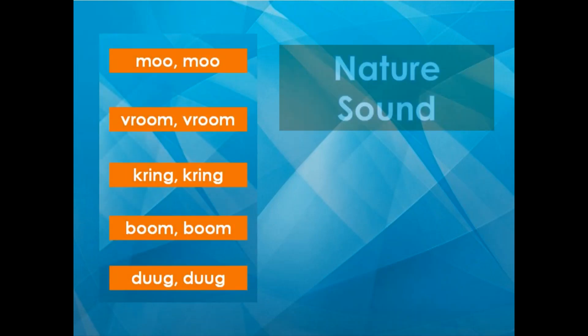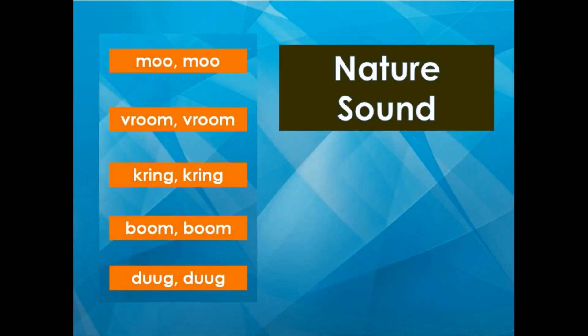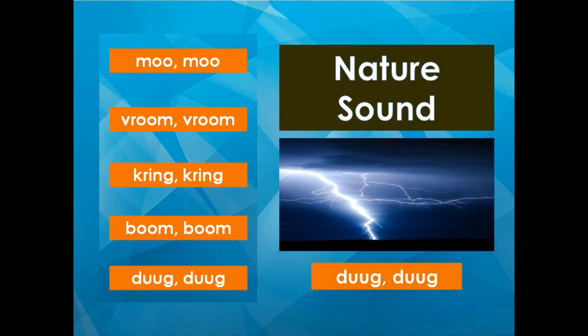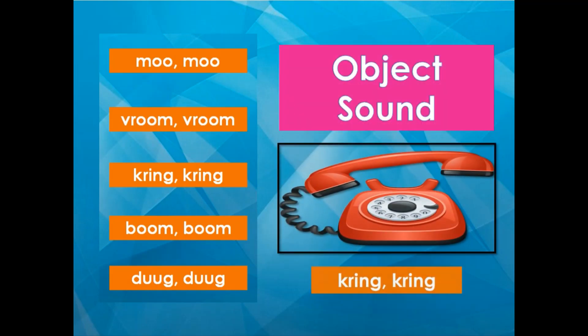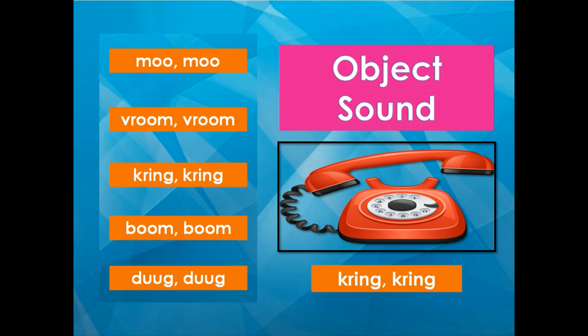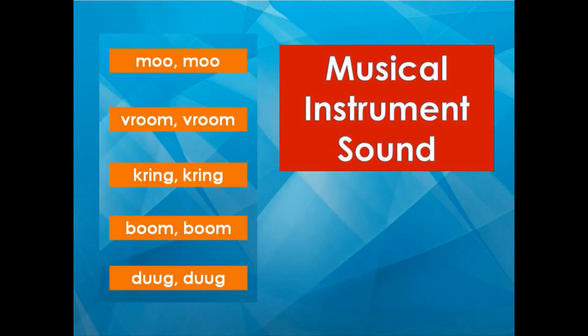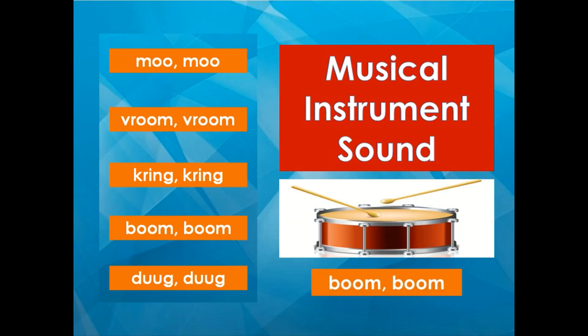Which of the following is a nature sound? That's correct! It's the thunder sound. Which of the following is an object sound? That's correct! It's the telephone sound — ring! Which of the following is a musical instrument sound? That's correct! It's the drum sound — boom!